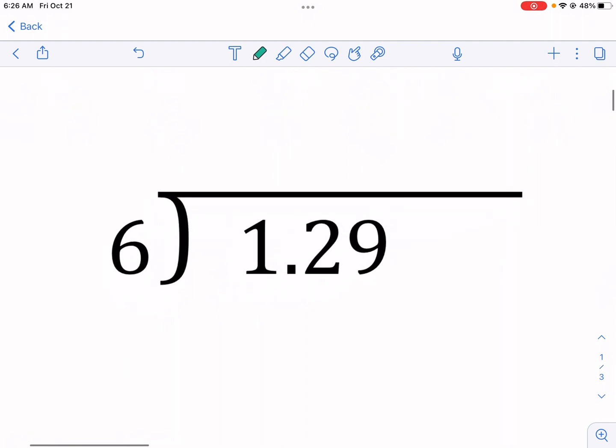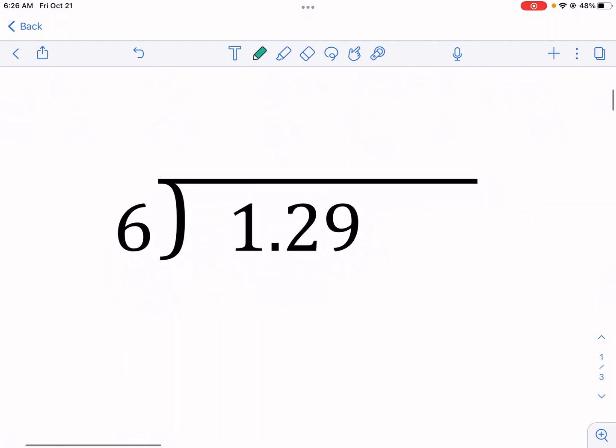So, you can see here, right away, if we multiply 6 times 1, we get 6. That's already bigger than 1.29. So, what do we do? Well, the first thing you're going to do as you approach this problem is I would go ahead and just plop that decimal right there. So, we're going to just take it up. We're going to plop that decimal down.